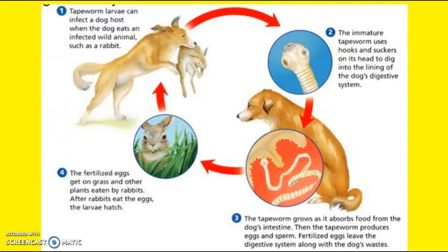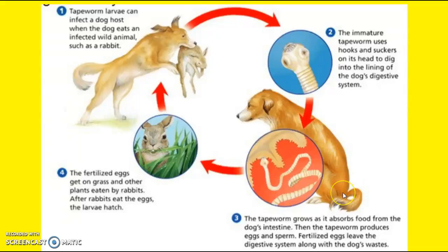So how does an animal get infected? Let's say we have a dog. This dog eats a rabbit and the rabbit had tapeworm. After the dog eats it, the tapeworm will go into the intestinal system of the dog. It'll start out small but as it absorbs nutrients it's going to grow. It will fertilize eggs and those eggs are going to leave the dog through its waste. The waste gets on the grass, the rabbit eats the grass, gets the eggs, and then the life cycle starts all over again.